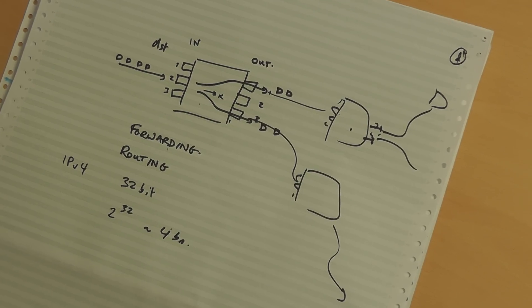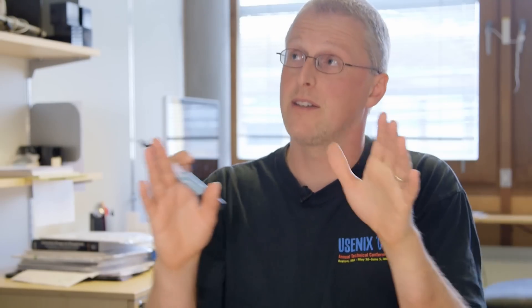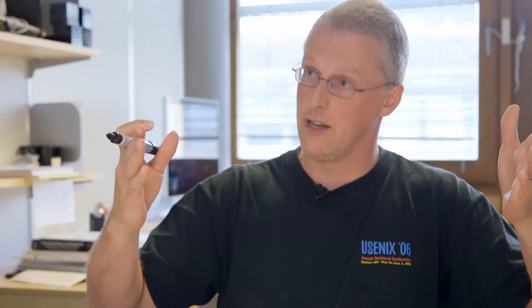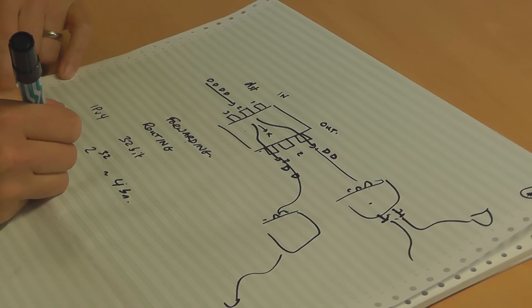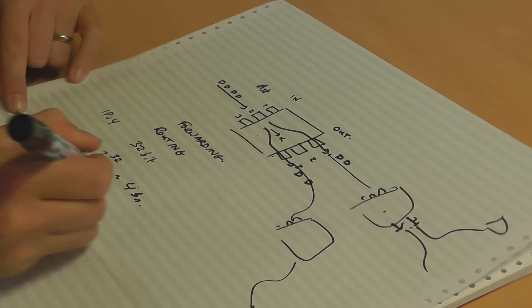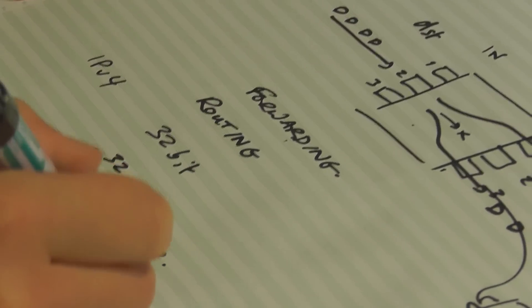A packet comes in, you look up the destination address in the table, and that says go out of interface 3, or interface 2, whatever it might be. Now in practice, a table of 4 billion entries is a big table to look through every time. So there are ways that table is essentially compressed by using what are called IP prefixes, so instead of having all possible addresses, you group them together by some prefix. The University of Nottingham prefix is 128.243 - so all addresses on the internet that begin 128.243 belong to the University of Nottingham.